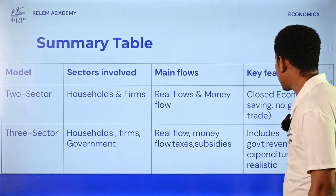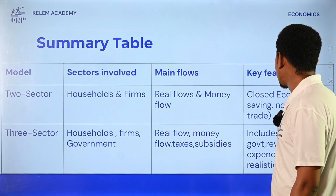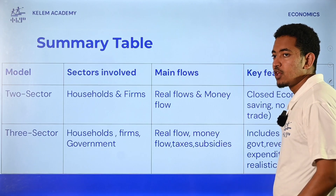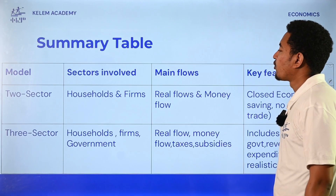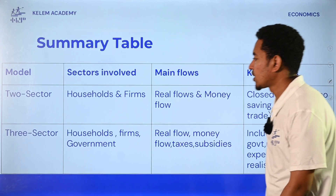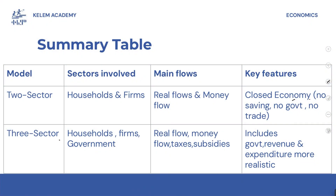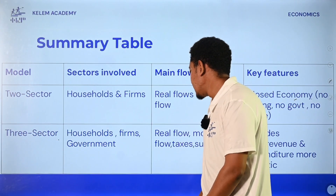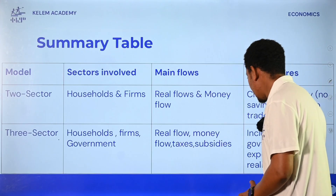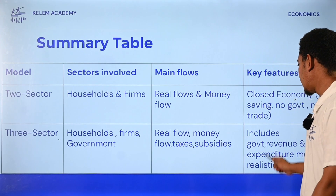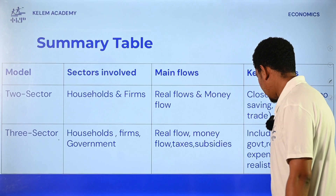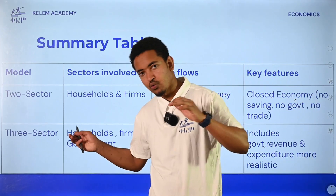The business is not a closed economy - no savings, no government, no trade. The business and international trade and a 3-sector model includes house, government, and firm with taxes and subsidies, including government revenue, expenditure - more realistic. Revenue and expenditure.